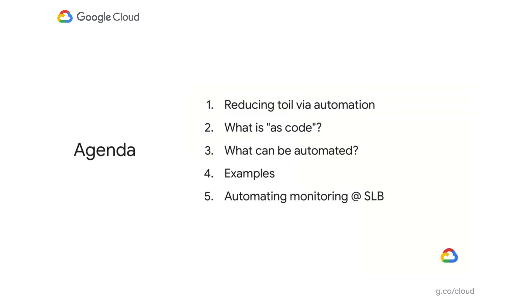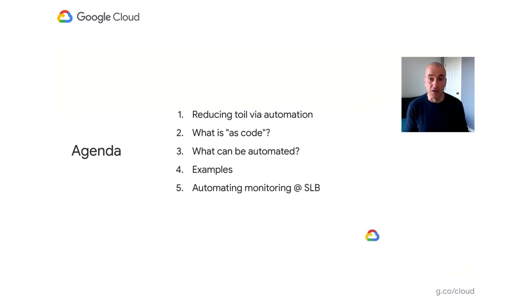So here are the topics we'll be covering today. We'll start by understanding the basics. We'll define the concept of toil as it relates to the practices of site reliability engineering. From there, we'll cover the objectives of as code practices. Next, we'll review the specific Google Cloud monitoring entities that can be automated and compare three approaches to automating them. I'll wrap up the first portion of the session by showing you a couple of specific examples of automating cloud monitoring entities. From there, I'll hand it over to Pod to cover the lessons learned at Schlumberger.